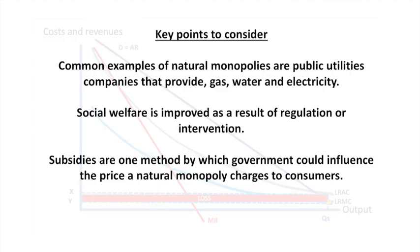The most common examples of natural monopolies are public utilities companies that provide gas, water, and electricity. These are generally necessities for consumers, so the government would want a situation in which the largest amount of people have access to them at lower prices than if these firms operated strictly for profit. Social welfare is improved as a result of this regulation or intervention, or at least the aim is to achieve that.